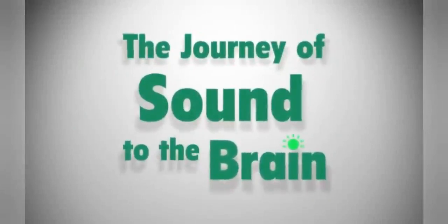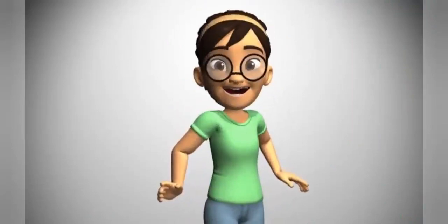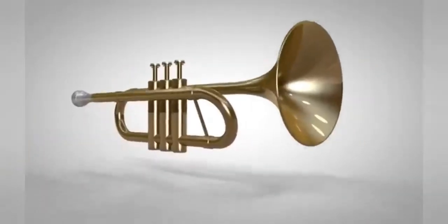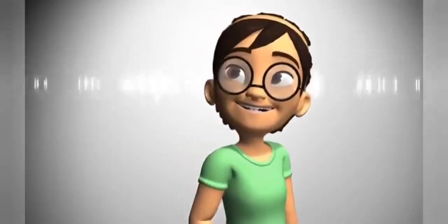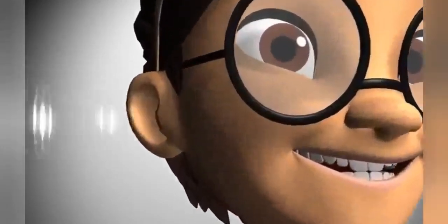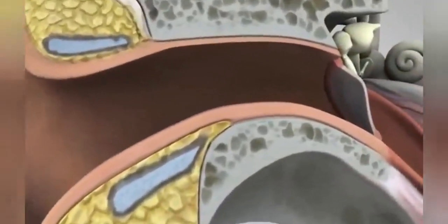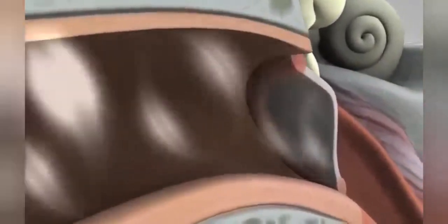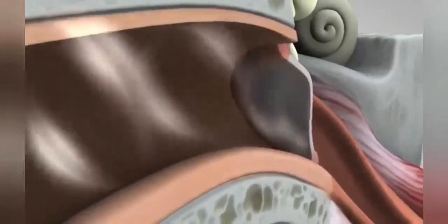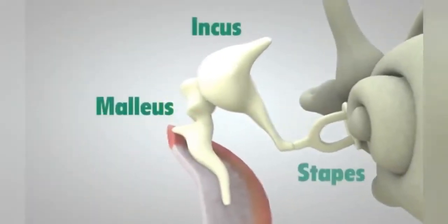Have you ever wondered how sounds make their way from the source all the way to your brain? Take a trumpet for instance. When it's played it makes sound waves in the air. The outer ear catches the waves which then travel through a narrow passageway called the ear canal. The sound waves reach the eardrum, which is a membrane roughly half the size of a dime. They make the eardrum vibrate, which in turn vibrates three tiny bones called the malleus, incus and stapes.